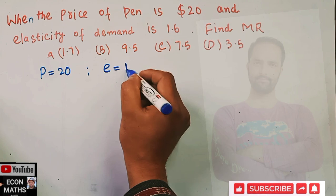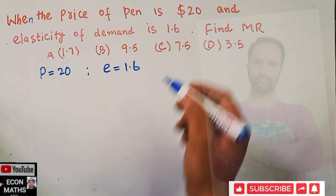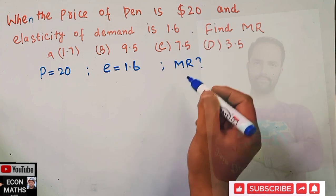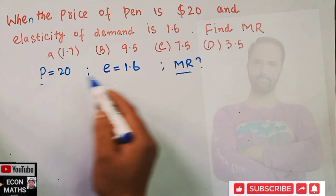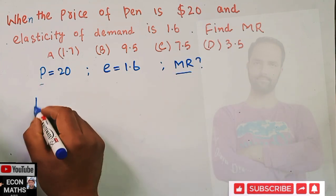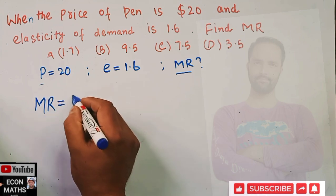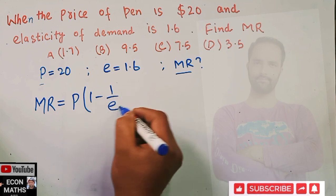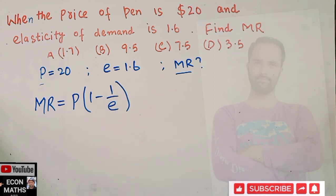What is the relationship between marginal revenue, price, and elasticity? It is given by: marginal revenue equals P times (1 minus 1 upon e). This is the relationship between marginal revenue, price, and elasticity. If you know this formula, you can calculate the answer.